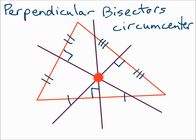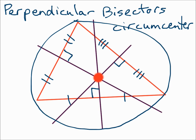The circumcenter is equidistant from the three vertices of the triangle. Because that's true, it's also the center of a circle that touches the three vertices of the triangle. Those three distances from the circumcenter to the vertices are all congruent, so be prepared to have those measures equal each other.